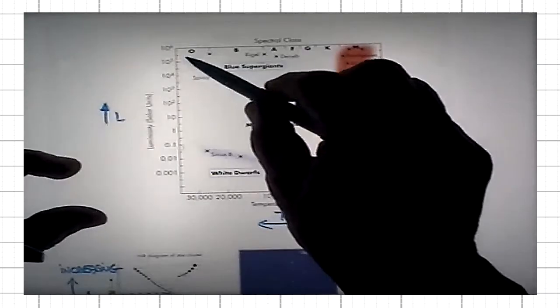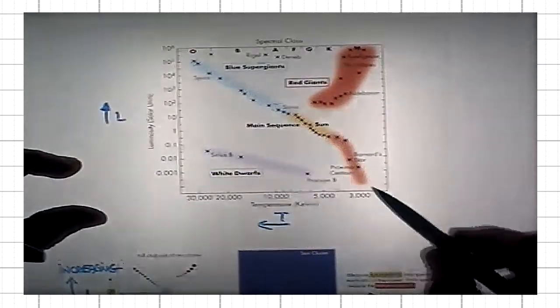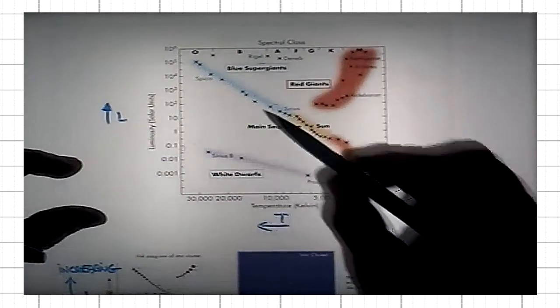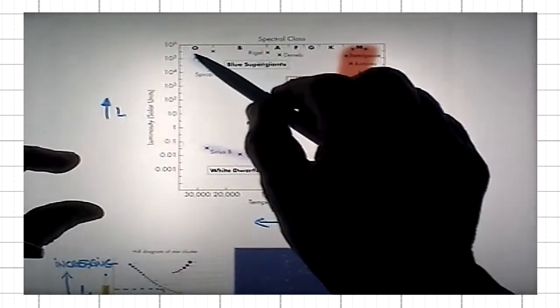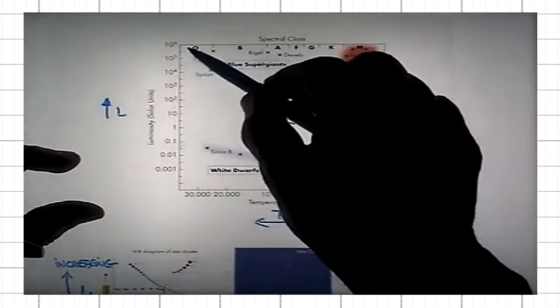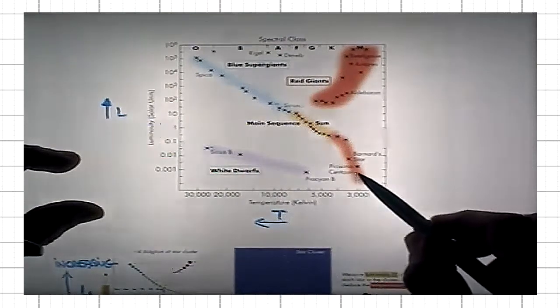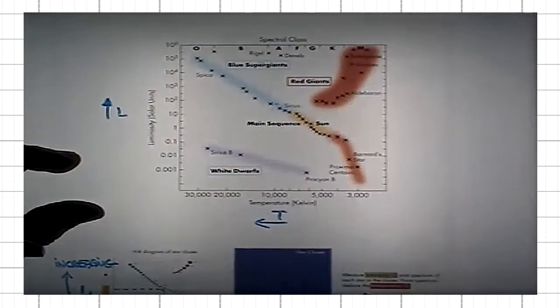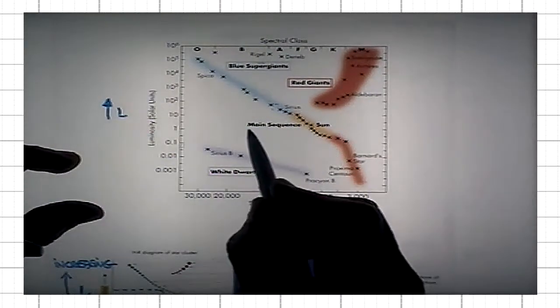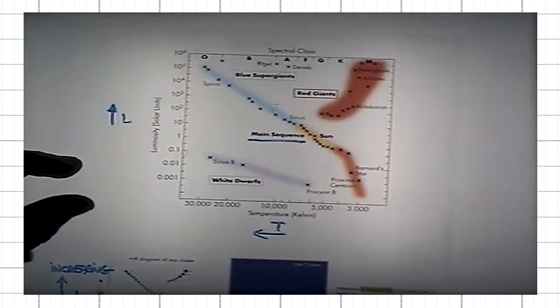One group of stars runs diagonally, from high luminosity and high temperature down to low luminosity and low temperature. This is the so-called main sequence group of stars.